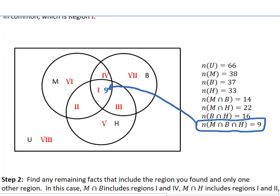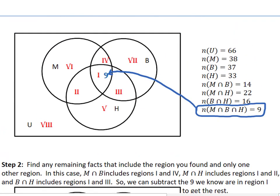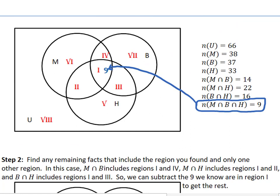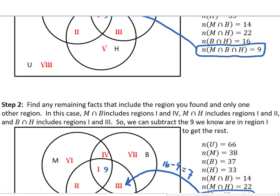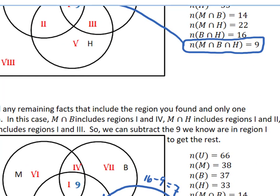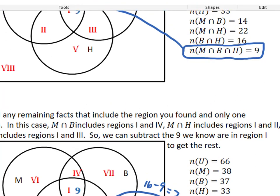So after we label that, our next step will be to find any remaining facts that include the region you found in only one other region. For example, in this case, M intersect B, the overlap between M and B here has region 1 and region 4 in it. We already know region 1. So if we now know M intersect B, we can find region 4. And that's the case not just for M intersect B, but also for B intersect H and M intersect H. All of the intersections of two sets include that region 1 and only one other region.